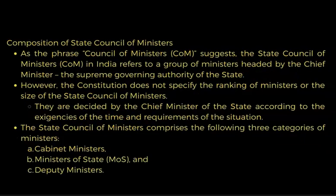Regarding the composition of the State Council of Ministers: the State Council of Ministers in India refers to a group of ministers headed by the Chief Minister, the supreme governing authority of the state. However, the Constitution does not specify the ranking of ministers or the size of the State Council of Ministers — these are decided by the Chief Minister according to the exigencies of the time and requirements of the situation. The State Council of Ministers comprises the following three categories of ministers: cabinet ministers, ministers of state, and deputy ministers.